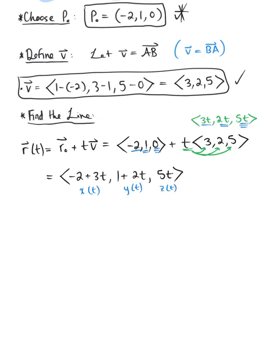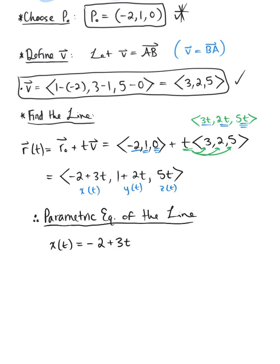So we can conclude that therefore, the parametric equations of this line, or one set of parametric equations, are as follows. We have x of t is equal to negative 2 plus 3t. We have y of t is defined as 1 plus 2t, and z of t is defined as 5t.